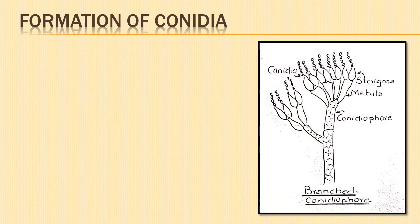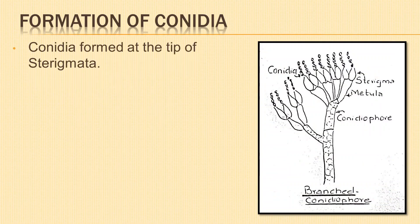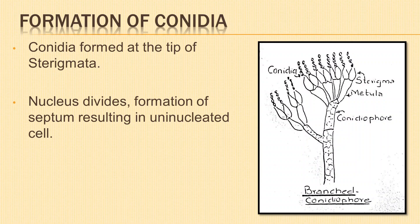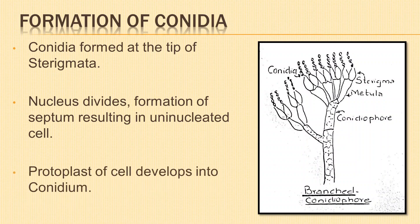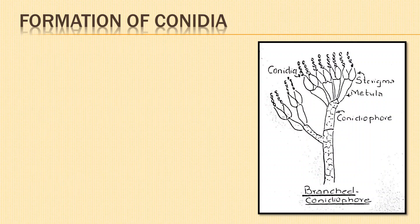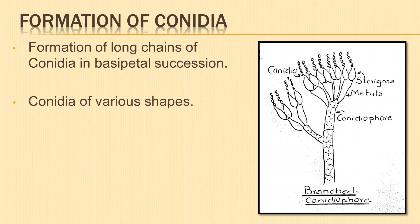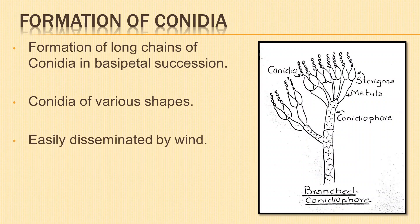Formation of conidia: the conidia are formed at the tip of the sterigmata. First, the tip swells. The nucleus divides into two. One of them migrates into the swollen tip. A septum develops and a uninucleate cell is formed. The protoplast of this cell develops into a conidium. The process is repeated several times, resulting in the formation of a long chain of conidia in basipetal succession. The conidia may be of various shapes like ovoid, elliptical, or pyriform, and may be smooth or rough.